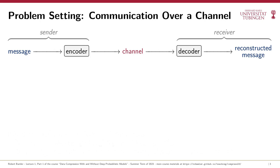We'll cover both the lossless and the lossy case in this course. But there are more nuances than the simple picture might suggest. It's important to distinguish what kind of message you want to communicate — for example, an image file, a text file, or real-time media that must be communicated with low latency like in video conferencing. More generally, the process of communication doesn't even have to be digital; the sender and receiver could be two people talking in the same room, and all these types of messages have certain properties.